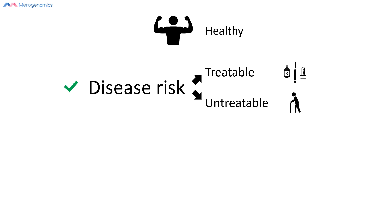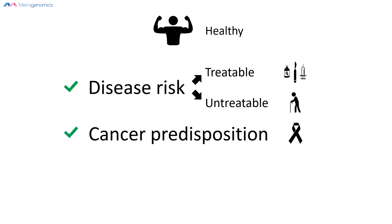What this test can offer you is the discovery of potential diseases that could be either treatable or untreatable. With treatable conditions, some intervention or treatment is immediately available. With untreatable conditions, the disease might not be curable, but other benefits may still be available — such as management of symptoms and access to clinical trials. Another set of information you receive is your cancer predisposition, which is technically already included in disease risk but is important to highlight, as it is a high area of interest for clients.